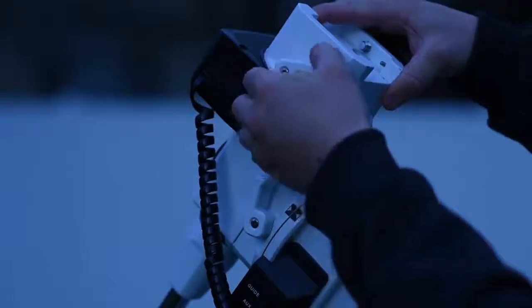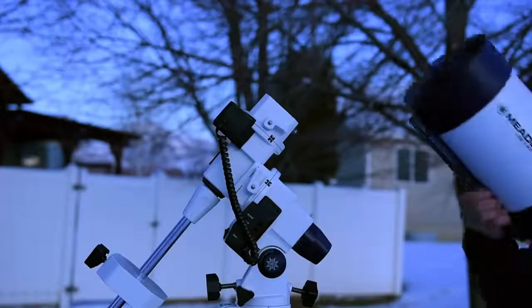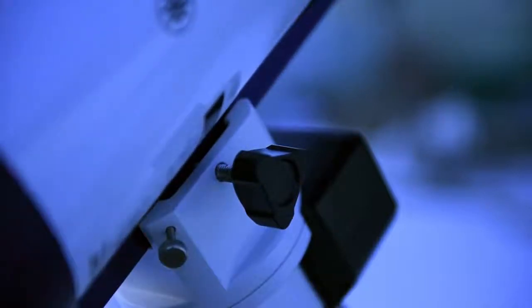As a reminder, the counterweight should always be installed before attaching the optical tube. Place your OTA's dovetail bar flat against the dovetail saddle of the LX85. Make sure the bar is flat against the saddle. With one hand holding the OTA, use your other hand to tighten the dovetail attachment screws. Check that everything is secure before letting go of the optical tube.